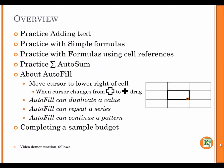Overview. Practice adding text. Practice with simple formulas. Practice with formulas using cell references. Practice sigma autosum. About autofill: move cursor to lower right of cell. When cursor changes from white cross to black cross, drag. Autofill can duplicate a value, repeat a series, or continue a pattern. Completing a sample budget. Video demonstration follows.